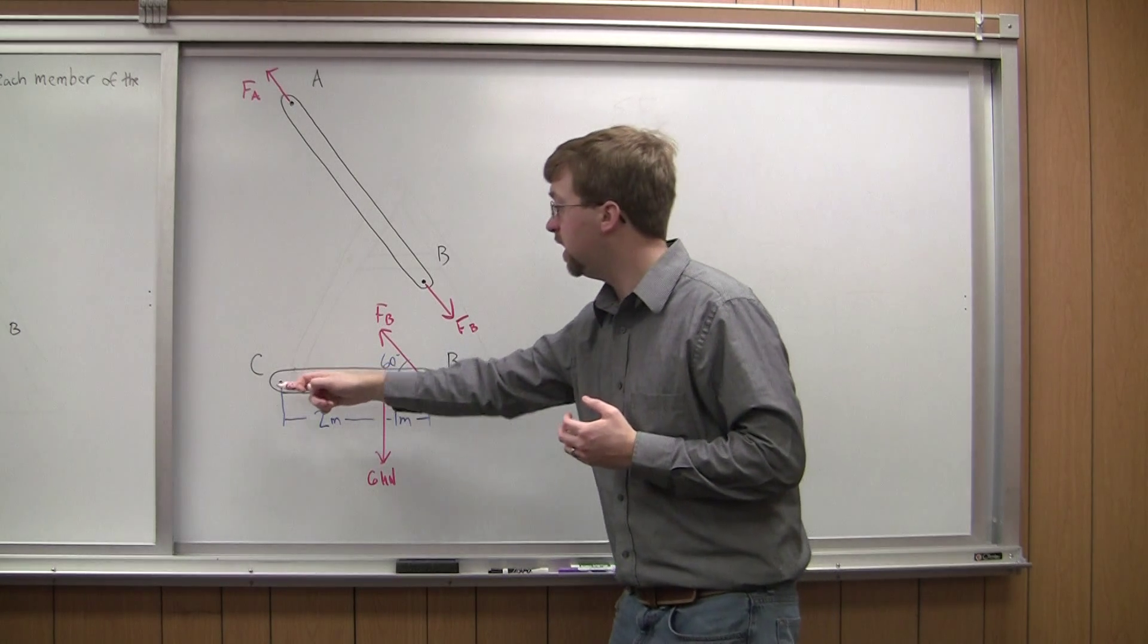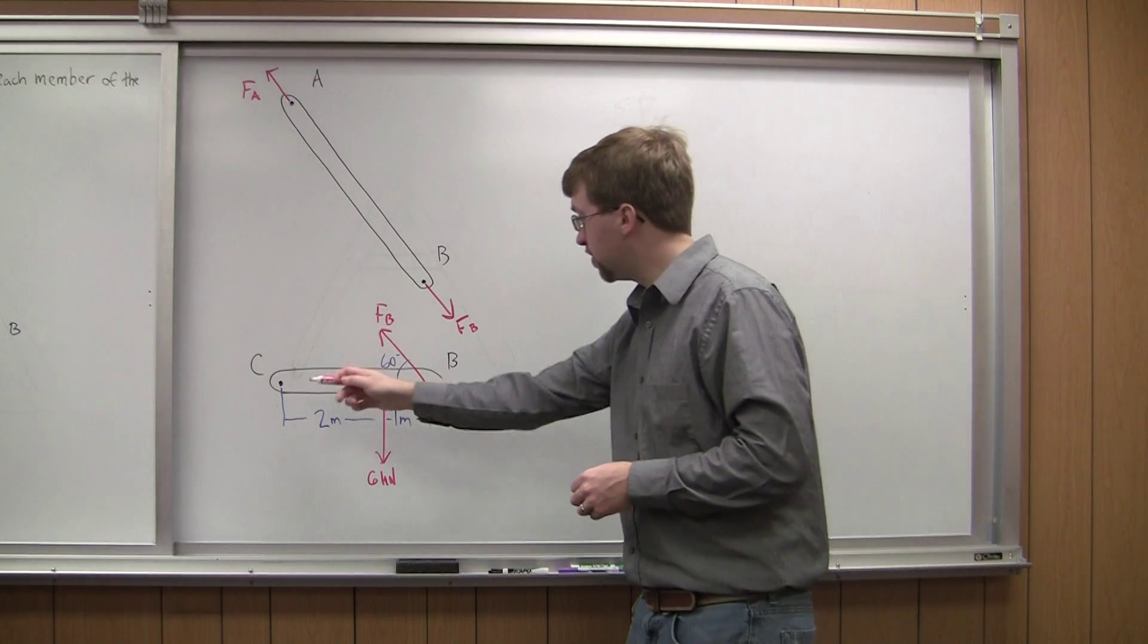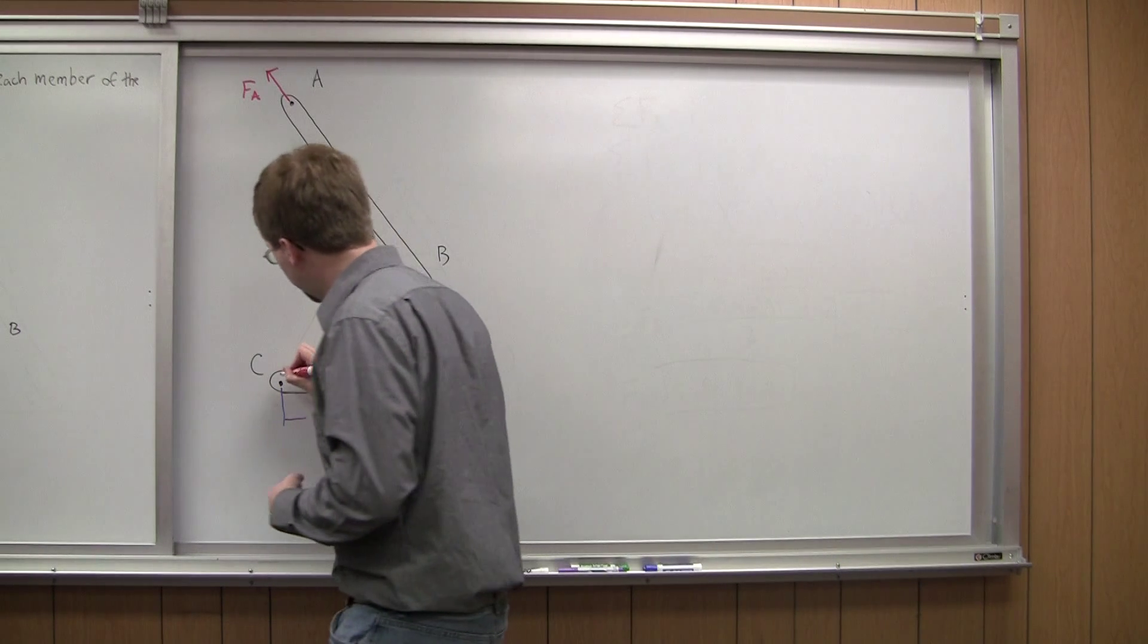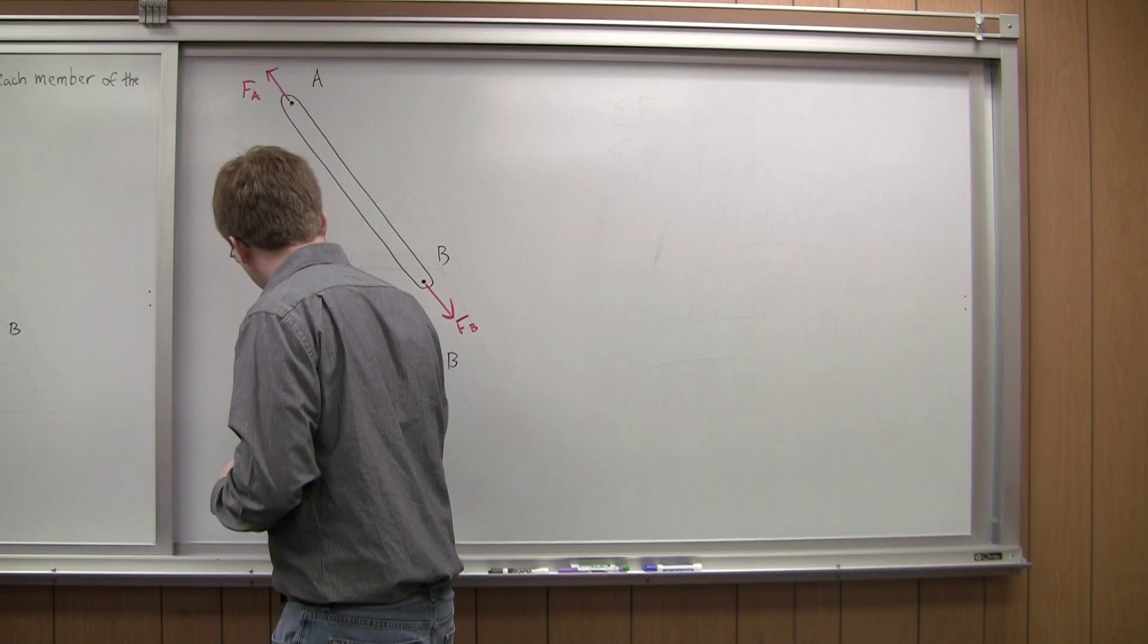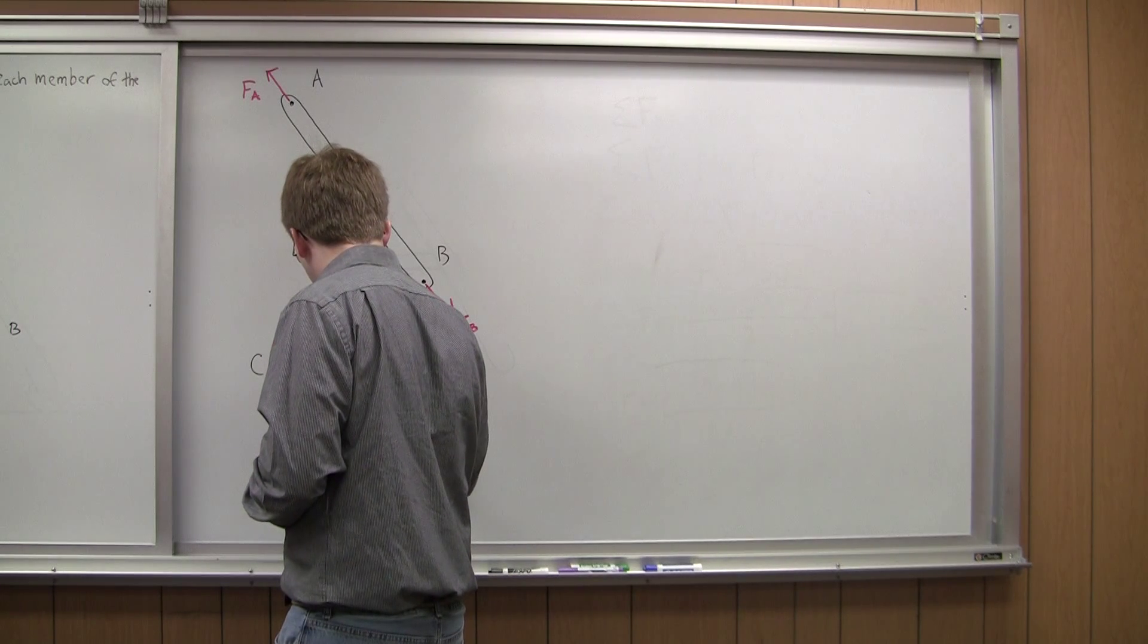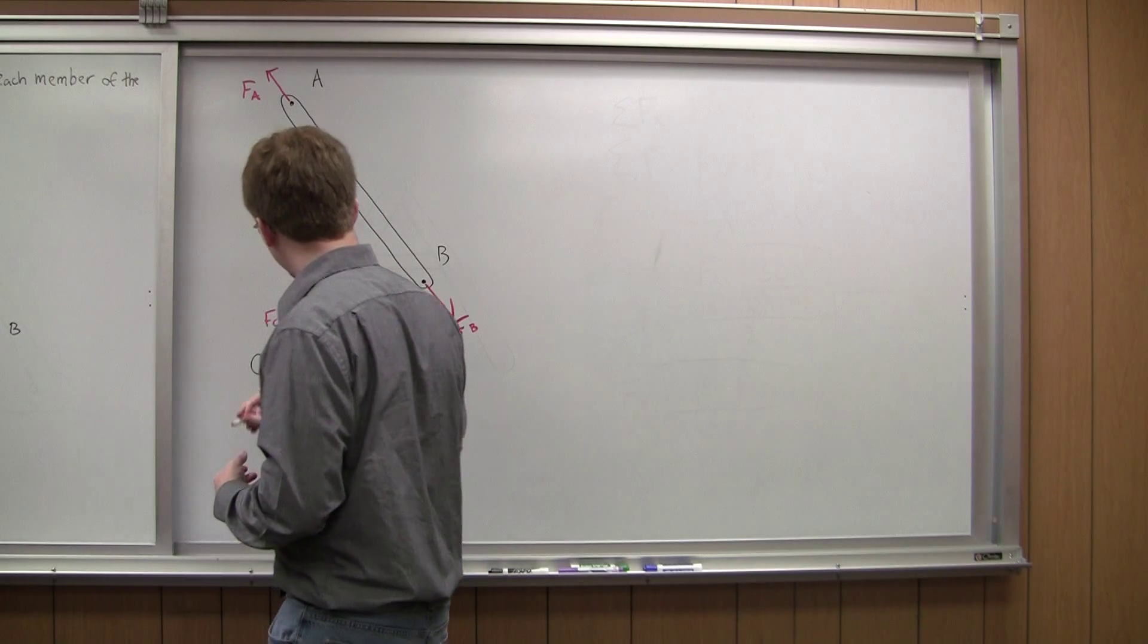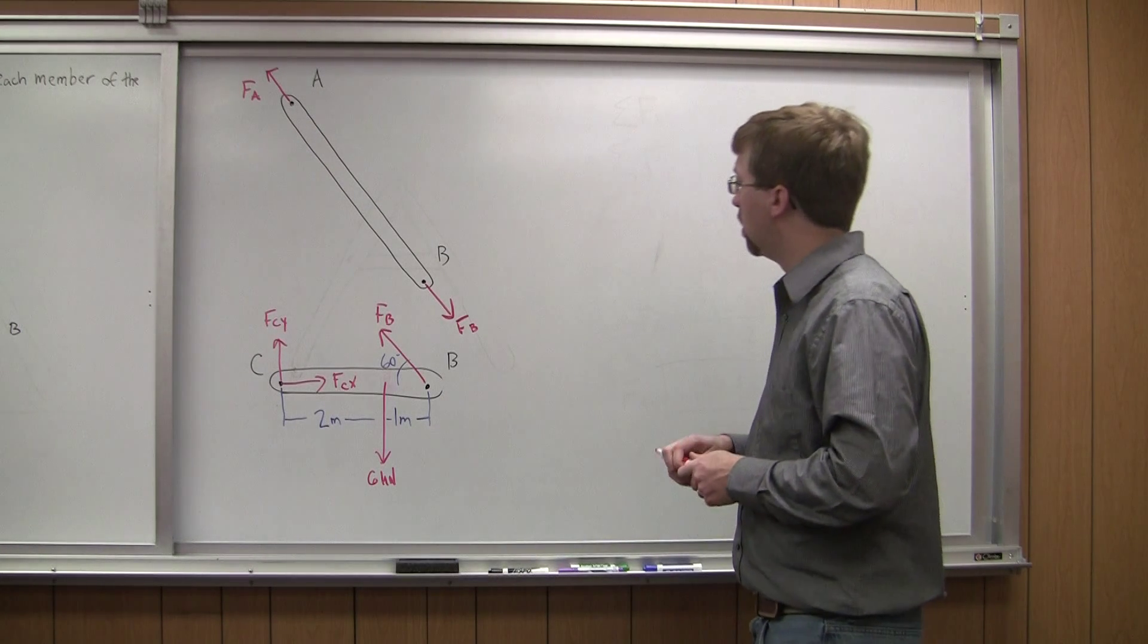At member, at joint C, however, member CB is not a two force member. So where it's anchored to the wall, I've got a potential for forces in both the X and the Y. So I'm going to call this one FCX and this one FCY. Alright? So now that I have my free body diagram together for this problem, the next thing I need to do is to draw out the equilibrium equations.